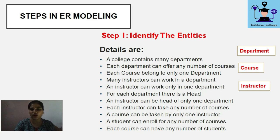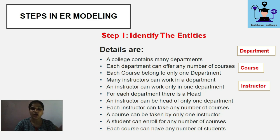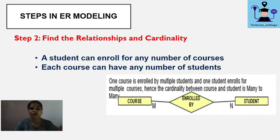An instructor can be head of only one department. Each instructor can take any number of courses, and a course can be taken by any one instructor. A student can enroll for any number of courses, so the next entity is Student. Each course can have any number of students.